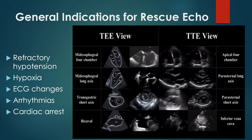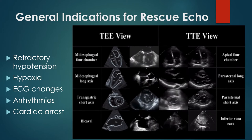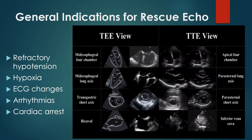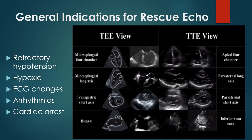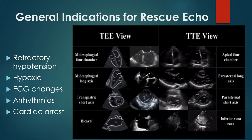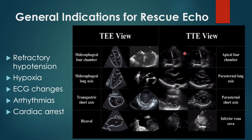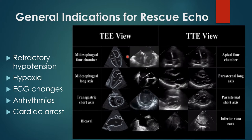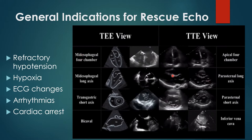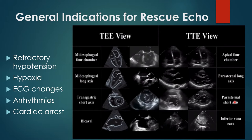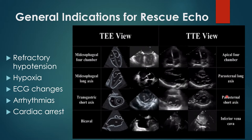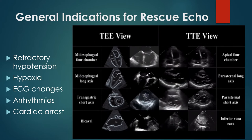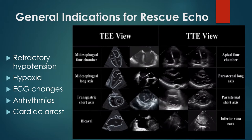The subcostal four-chamber view can be obtained during CPR. While TEE is often considered for rescue echo, you can get TTE equivalents of every TEE view: the apical four-chamber equals the mid-esophageal four-chamber; the parasternal long axis equals the mid-esophageal long axis; and the transgastric short axis equals the parasternal short axis. These three basic rescue views are achievable with TTE.